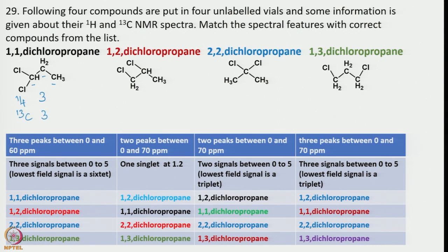If you look at the most deshielded proton, it should give a triplet by coupling with the adjacent CH2. The lowest field signal is a triplet.